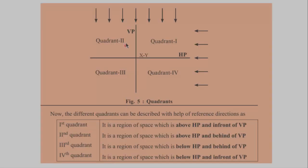Concluding, we can say that HP and VP divide the entire space into four equal parts. Each part we call a quadrant. Numbering these quadrants: this is the first, this is second, this is the third, and this is fourth quadrant.